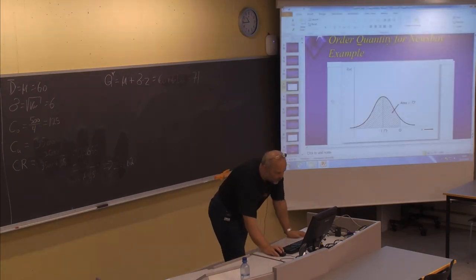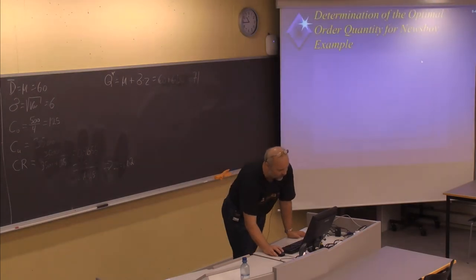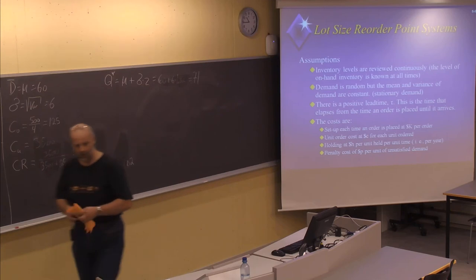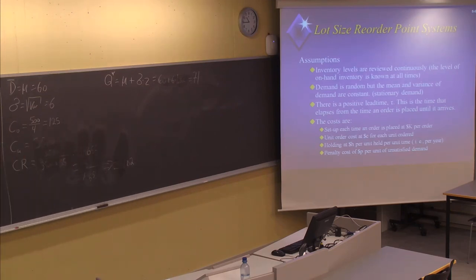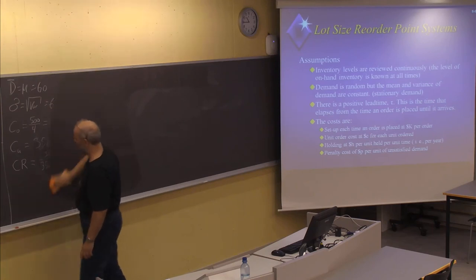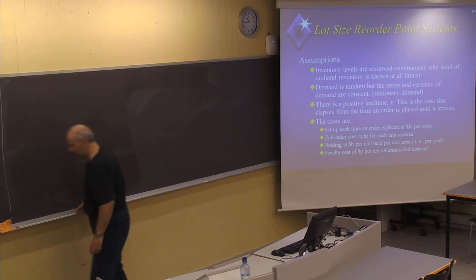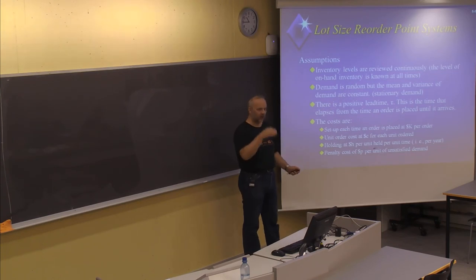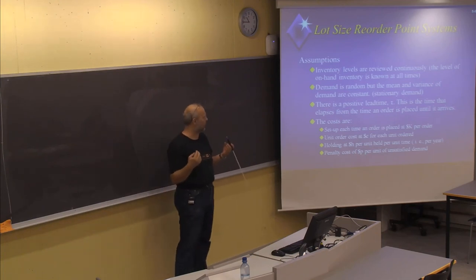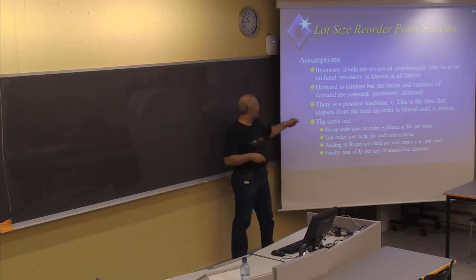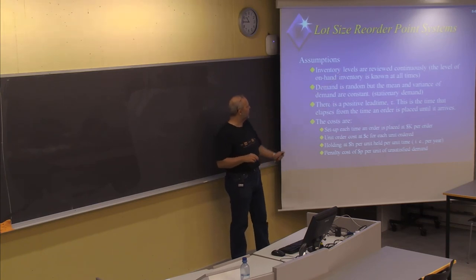Now we are finished with the one-period problem and can continue to the lot-size reorder point system, which is more closely related to the methods we learned for fixed or deterministic demand. The assumptions here are that inventory levels are reviewed continuously — at any time you can check the exact number of items on stock — but demand is random.